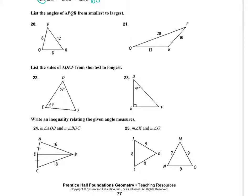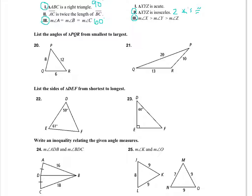For questions 20 and 21, we list the angles of triangle PQR from smallest to largest. We're given side lengths and need to identify the corresponding angles. The smallest side corresponds to the smallest angle — the angle opposite that side. So angle P is the smallest angle. My next smallest angle is across from the next smallest side, which is angle R, and my largest angle is across from the largest side, which is angle Q.